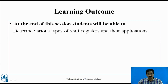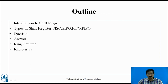Learning Outcome: At the end of this session, students will be able to describe various types of shift registers and their applications. Outline: Introduction to Shift Registers, Types of Shift Registers — SISO (Serial-In Serial-Out), SIPO, PISO, PIPO — followed by Question and Answer, Ring Counter, and References.